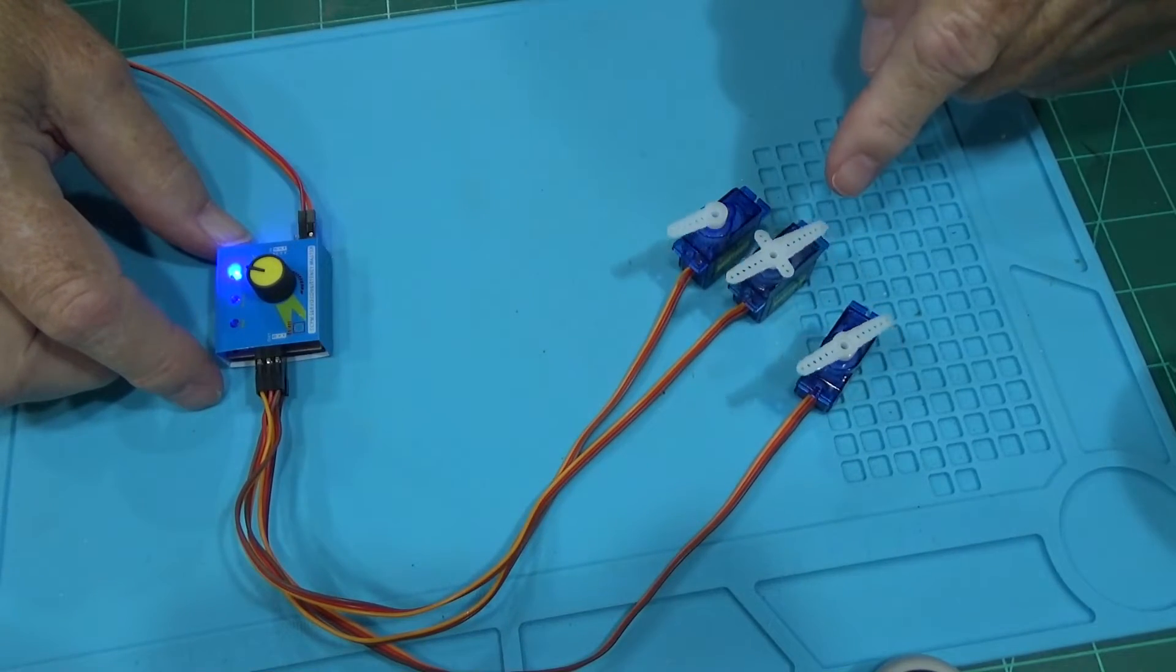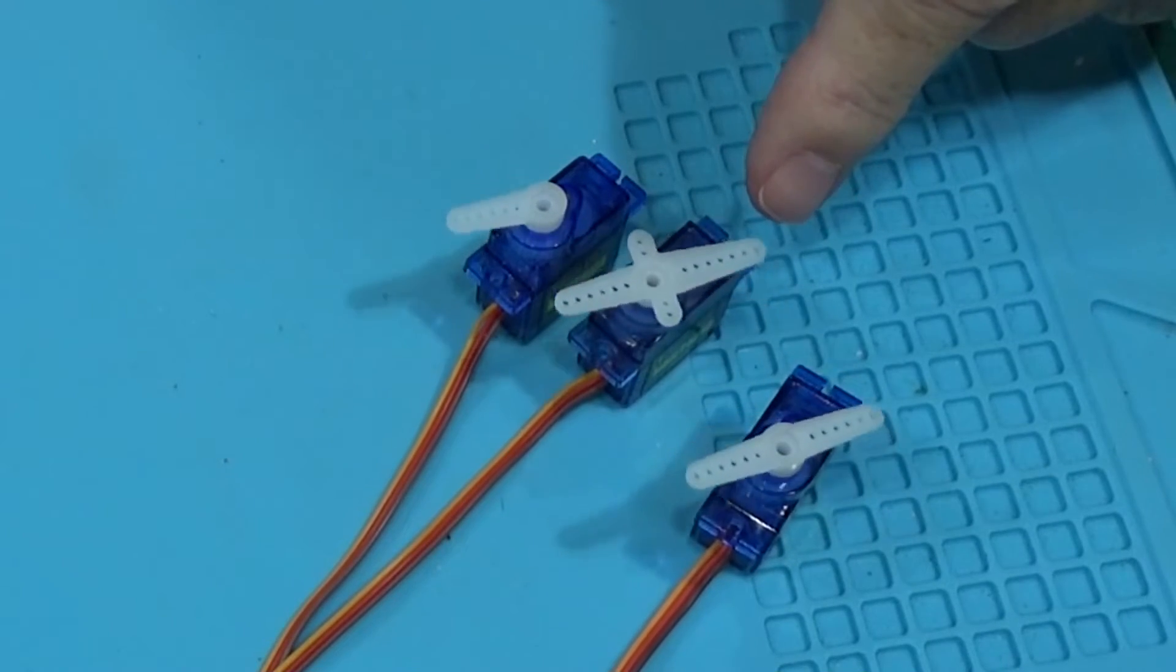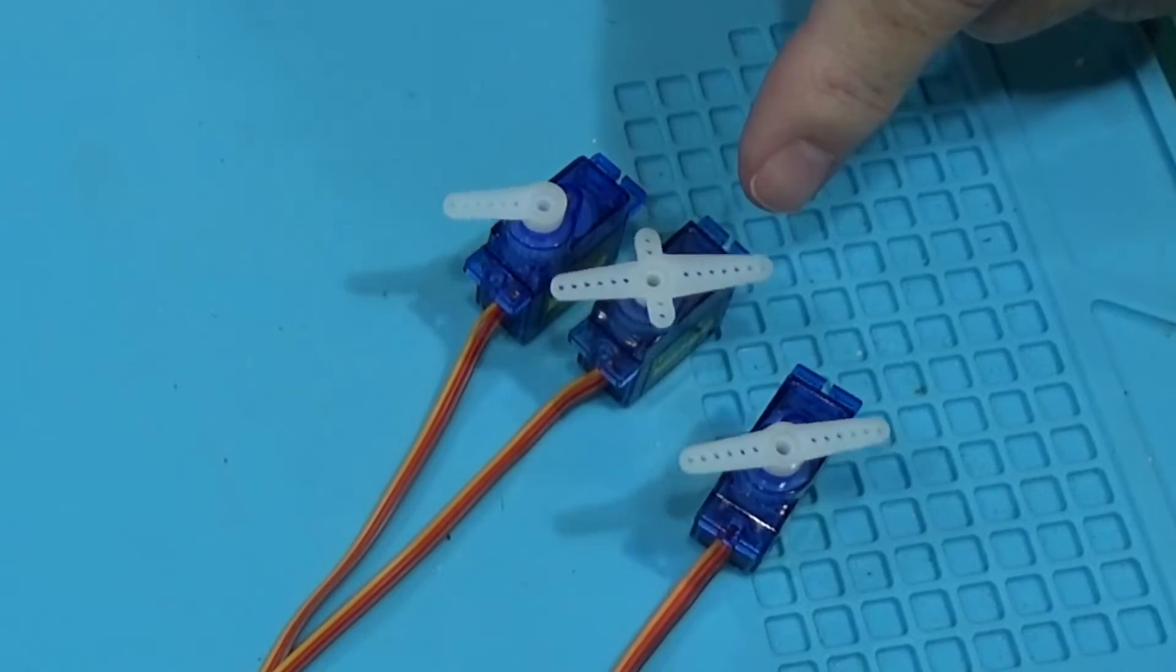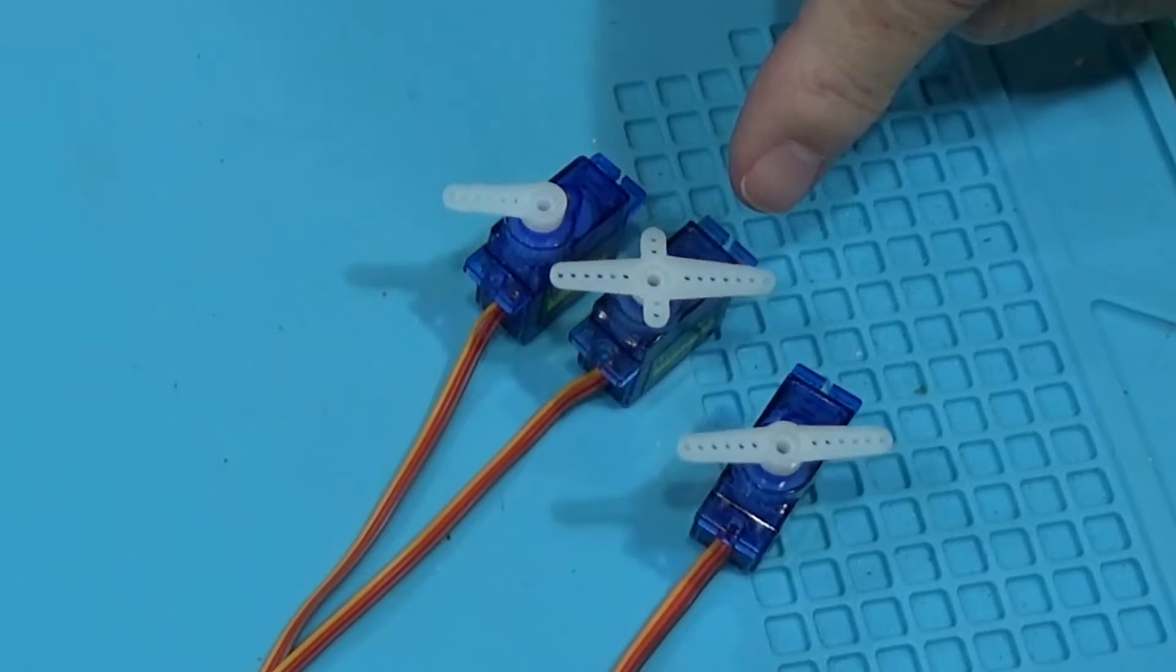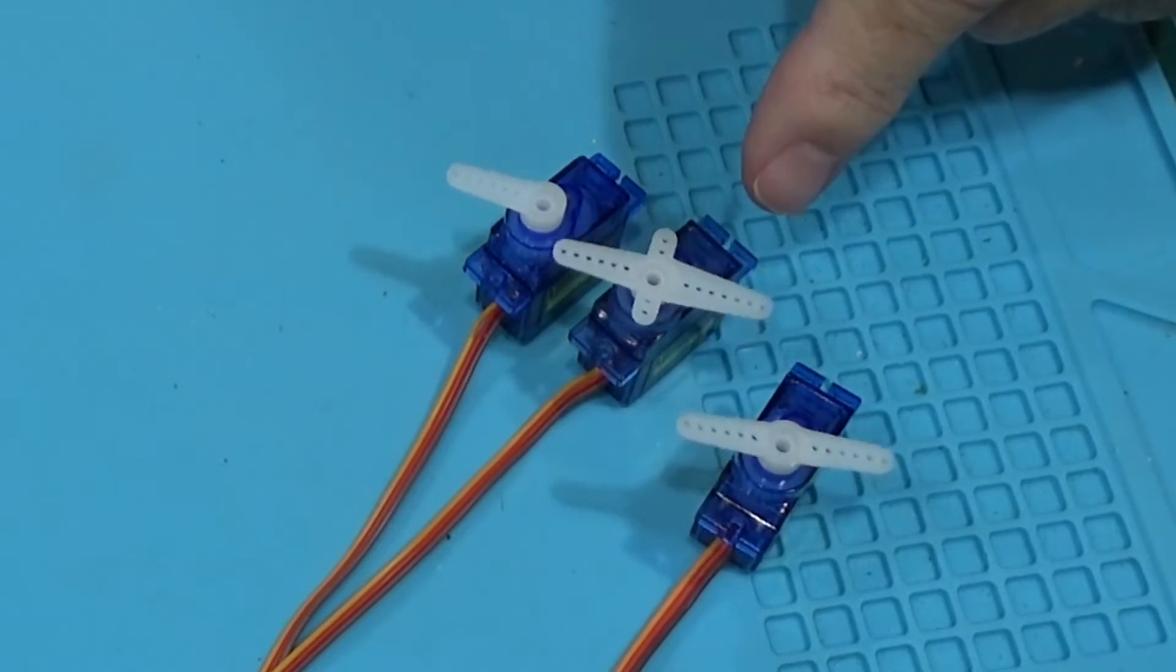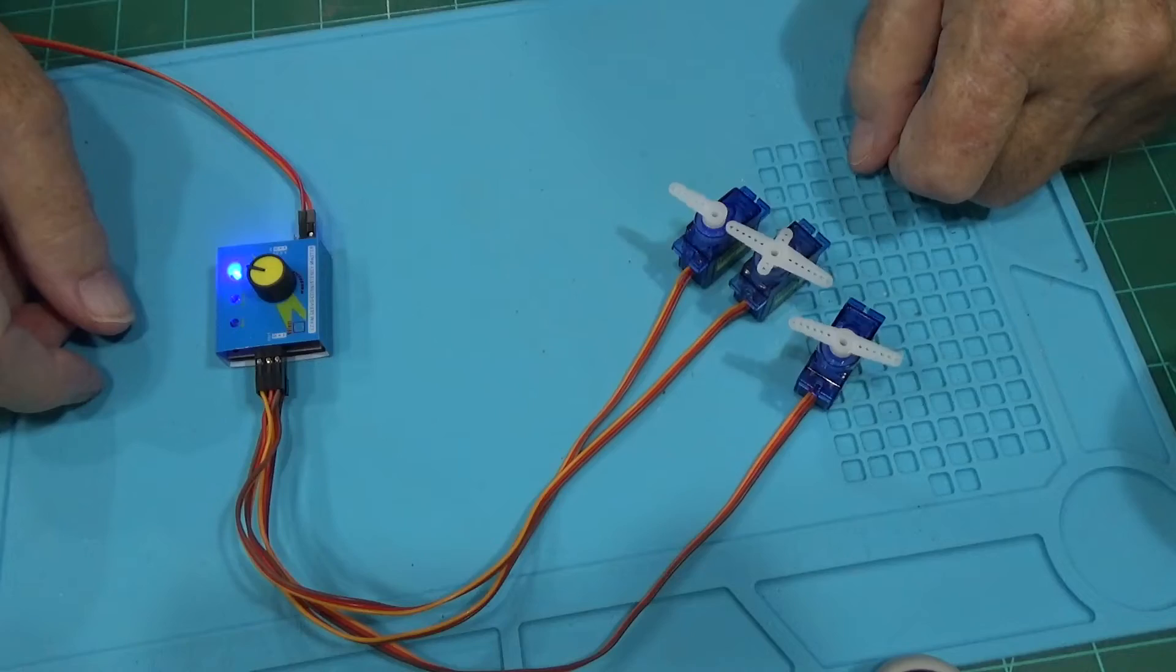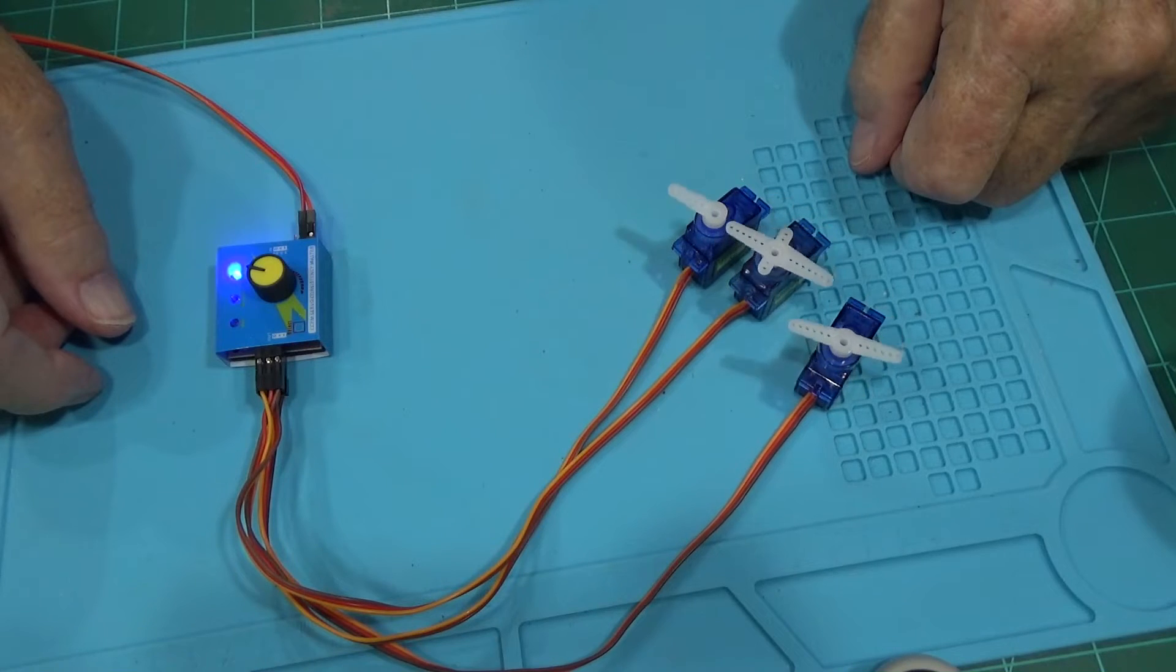Okay, now the second test centers the servo and the third one sweeps it back and forth. So you could see also on here that I could tell that the servo doesn't have its full travel. So that's just an easy way of determining what your servo is capable of doing, if it's a good or bad servo.